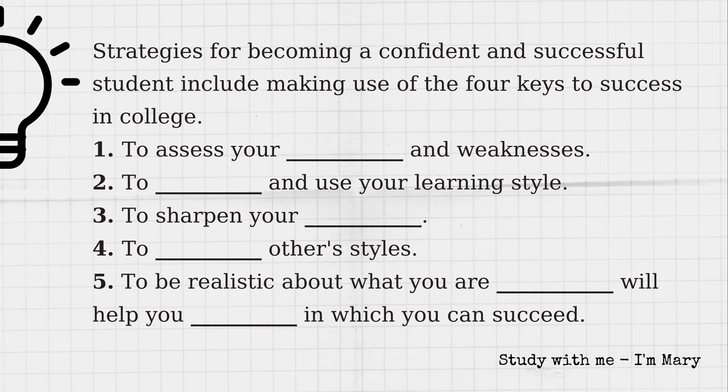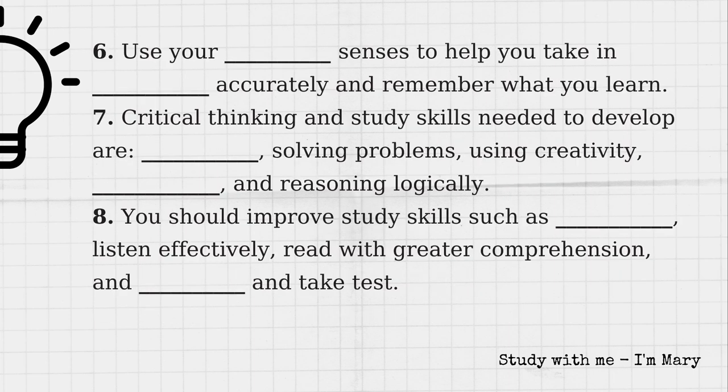Many students want to know how to be a confident student. It's a good question. Strategies for becoming a confident and successful student include making use of the four keys to success in college: 1. To assess your academic strengths and weaknesses; 2. To discover and use your learning style; 3. To sharpen your thinking and study skills; 4. To adapt to others' styles. To assess your academic strengths and weaknesses means to be realistic about what you are able to do. This will help you select courses in which you can succeed. This is the most important key when you enter college.